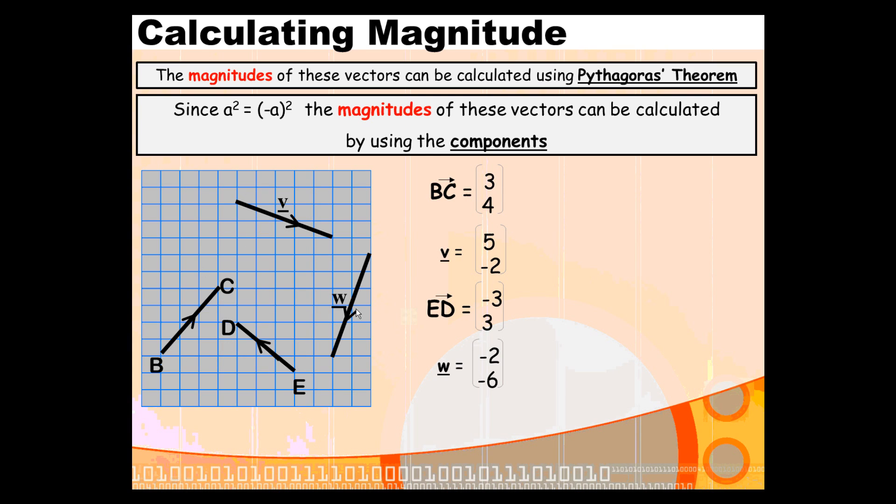Looking at these four vectors here, we can see where the components come from. For example, to go from B to C, you go along by 3, up by 4. That gives us our x component and y component. For vector v, we're going along by 5, down by 2, and you can see where the 5 and the negative 2 come from.